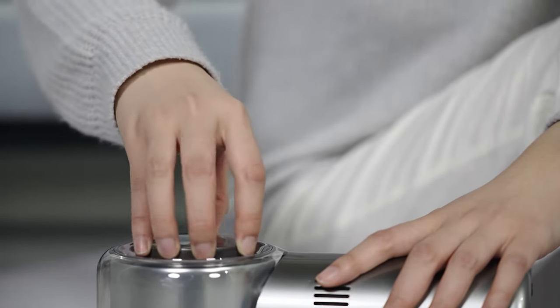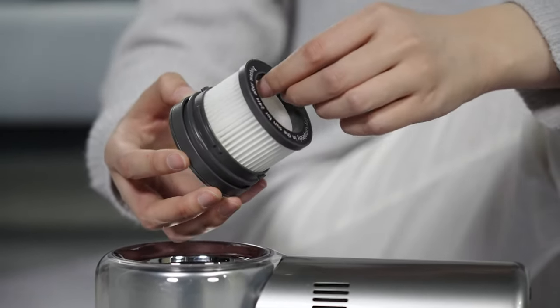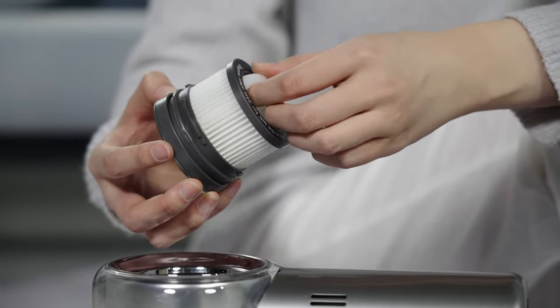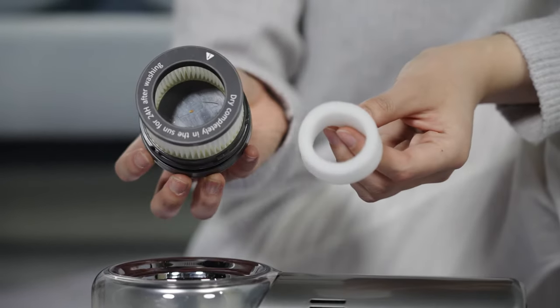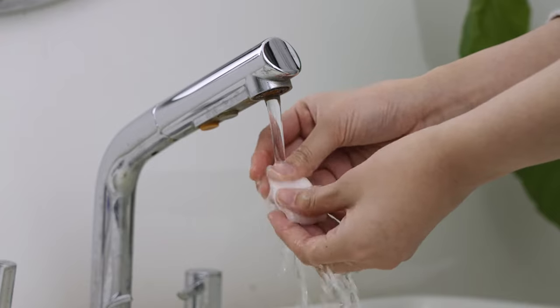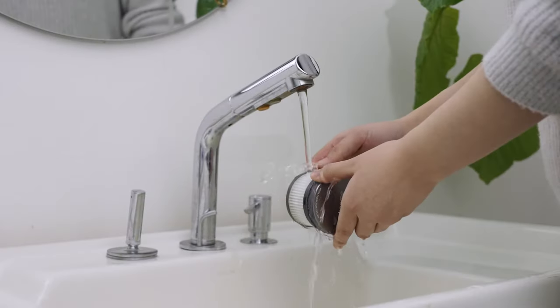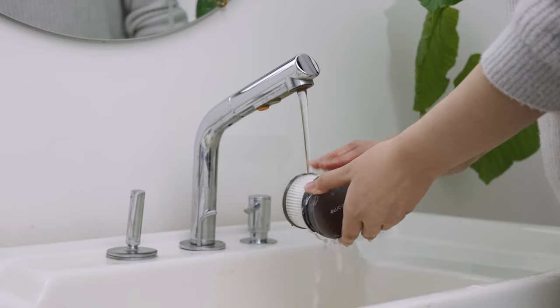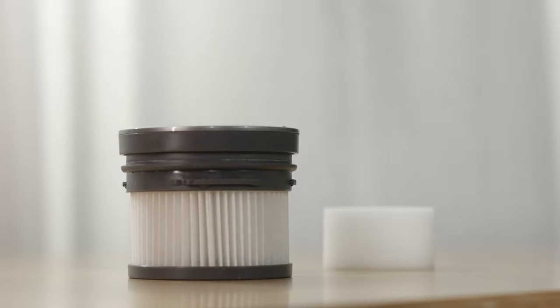Turn the upper cover of the filter element counterclockwise to take out the filter element. Remove the built-in sponge. Clean the filter with clean water. After washing, dry in the air for at least 24 hours until it is fully dry.